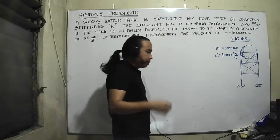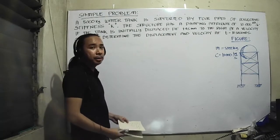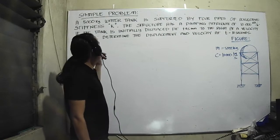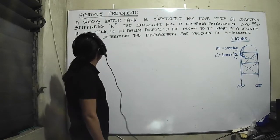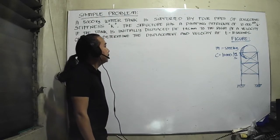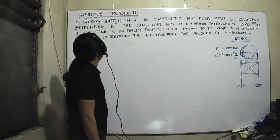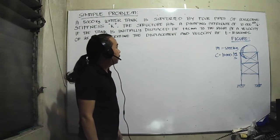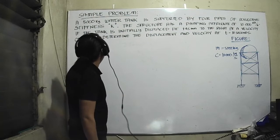In this video we'll discuss sample problems of SDOF systems with damping. A 500 kilogram water tank is supported by four pipes of collective stiffness K. The structure has a damping attribute of 10,000 kilogram per second. The tank is initially displaced at 45 millimeters to the right with a velocity of 25 millimeters per second.